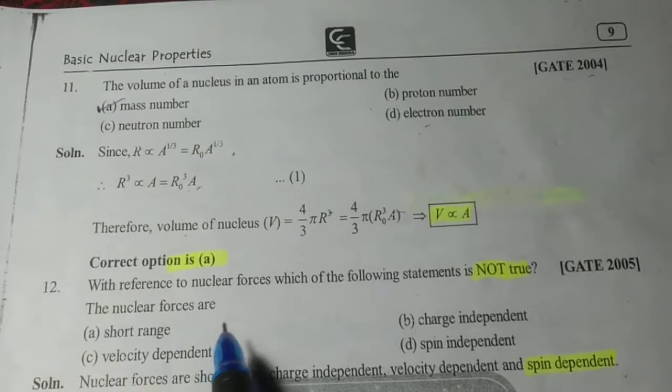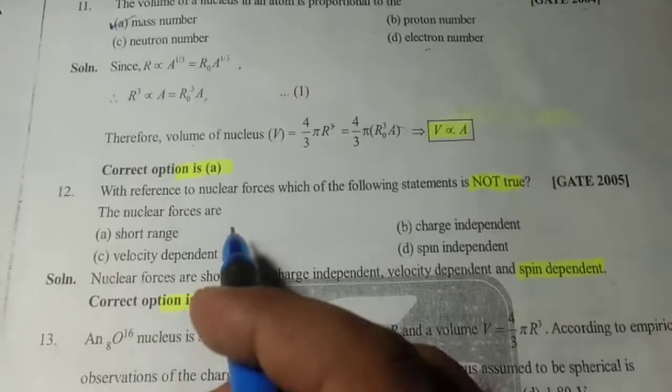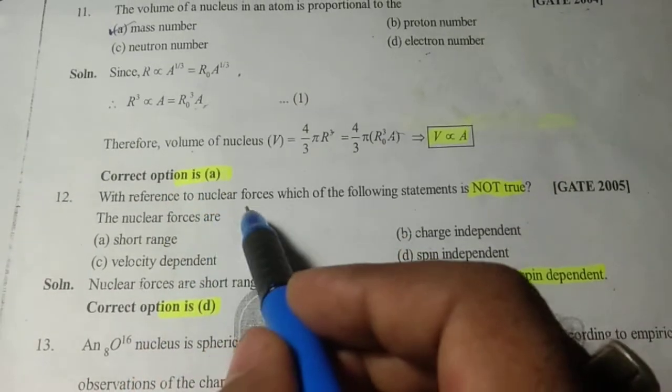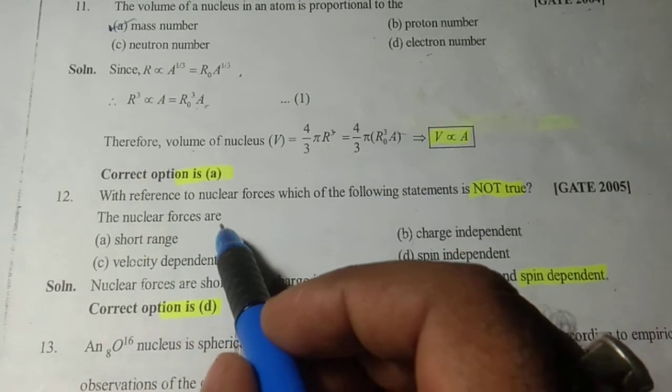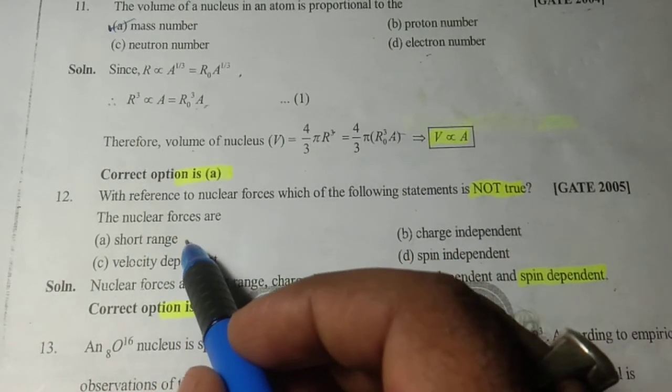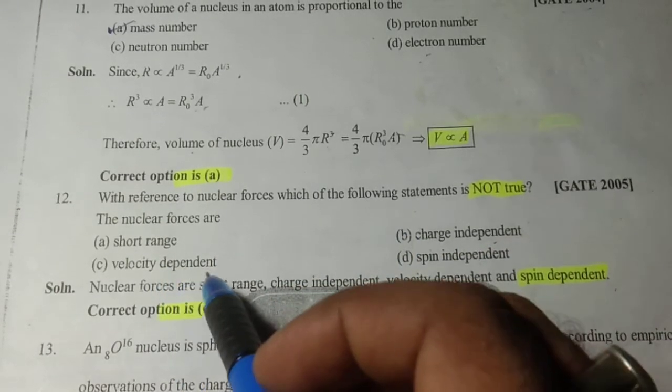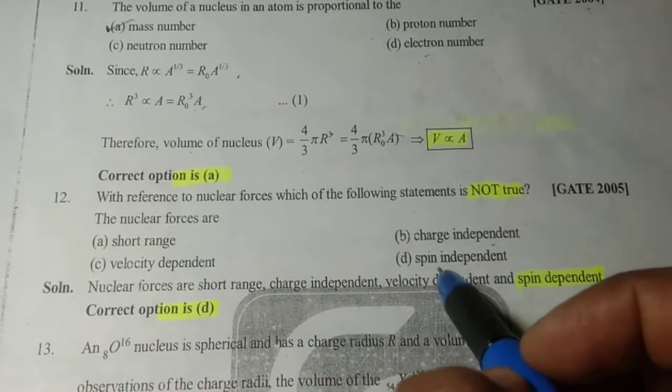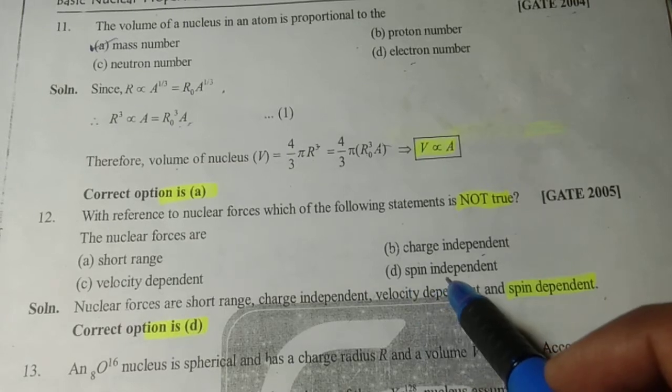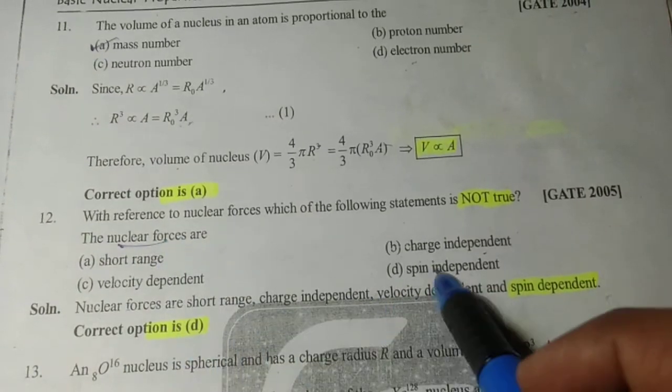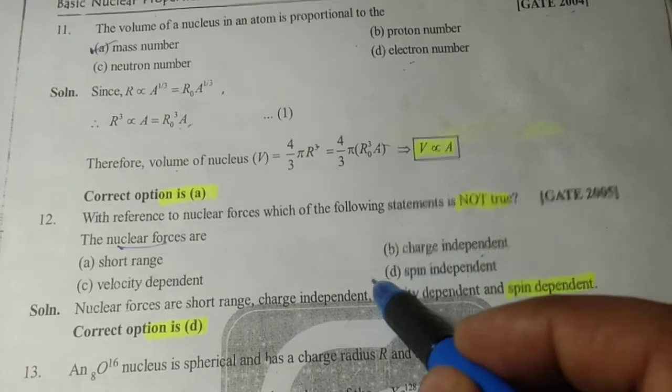Now the next question: With respect to nuclear forces, which of the following statements is NOT true? The nuclear forces are (a) short range - correct, (b) charge independent - correct, (c) velocity dependent - correct, (d) spin independent. The correct option is D, as nuclear forces are spin dependent.